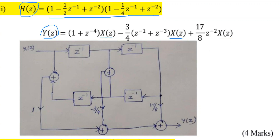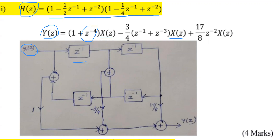Going to the realization, X of Z can be placed here. You can see the maximum number of delay elements is Z power minus 4, so maximum 4 delay elements can be used. Therefore Z power minus 1 is delay element number 1, number 2, number 3, and number 4.